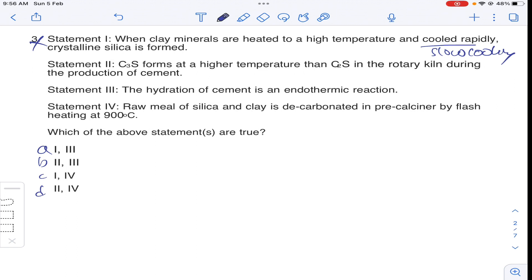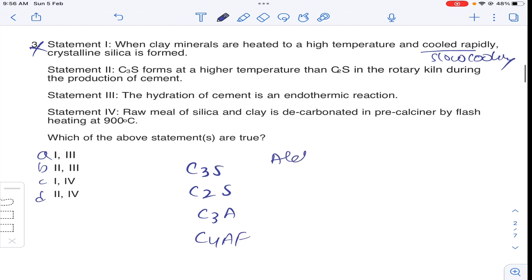Coming to second statement, C3S forms at higher temperature than C2S in rotary kiln during production of cement. So generally there are 4 Bogue compounds: C3S, C2S, C3A, C4AF. So it is called alite, belite, celite, ferrite. So this forms at higher temperature. This forms at lower temperature. So this is a correct statement.